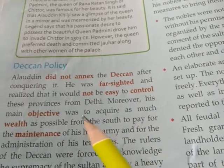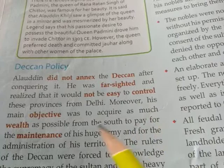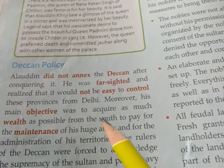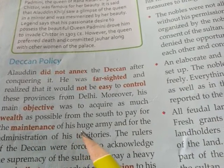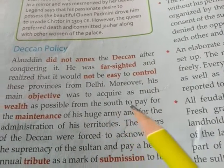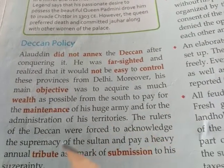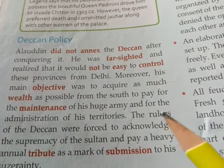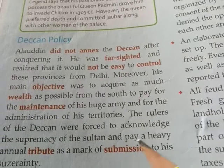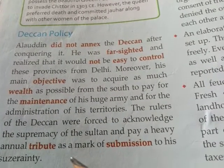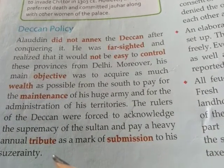Alauddin was farsighted and realized that it would not be easy to control these southern provinces from Delhi. His main objective was to acquire as much wealth as possible from the South, in order to pay for the maintenance of his huge army and for the administration of his treasury. The rulers of the Deccan were forced to acknowledge the supremacy of the Sultan and pay a heavy annual tribute as a mark of submission to his sovereignty.